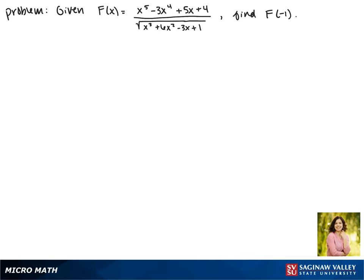Given that f(x) equals x^5 - 3x^4 + 5x + 4 all over the square root of x^3 + 6x^2 - 3x + 1, today we'll be finding f(-1).